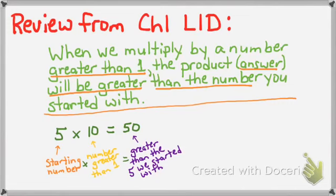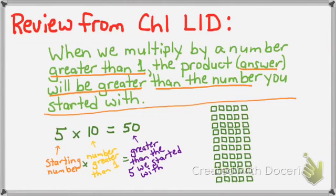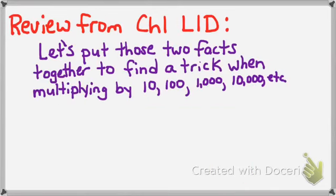I started with 5, and I'm going to write that 10 times — 2 times, 3 times, 4 times, 5 times, 6 times, 7 times, 8 times, 9 times, and 10 times. So if I take 5 and show it 10 times, my answer is going to be greater than the number I started with. We can put those two facts together to find a trick when multiplying by a power of 10 number — that's a number with a 1 and 0s.